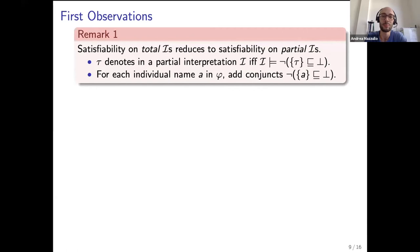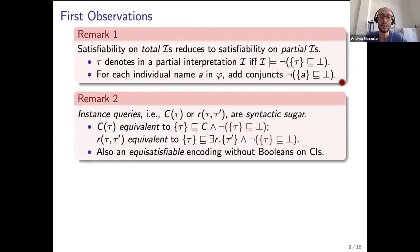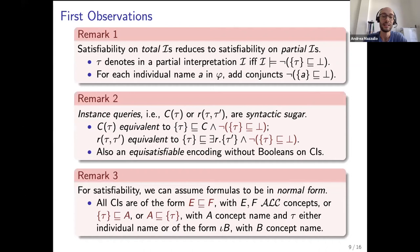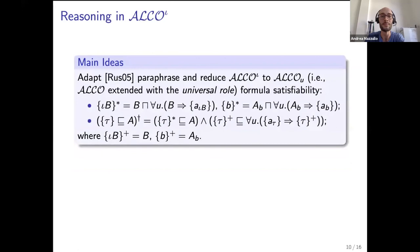A few basic remarks: satisfiability on total interpretations can be reduced to satisfiability on partial interpretations by requiring that each individual name denotes using the formula not nominal of A subsumed by bottom. Instance queries of the form C of tau or R tau tau prime are syntactic sugar and can be encoded using formulas containing only concept inclusions. There is also an encoding for yellow iota, and for satisfiability checking we can assume formulas to be in some kind of normal form where definite descriptions have the form iota B where B is a concept name.